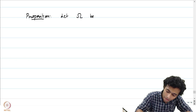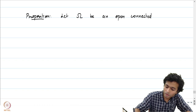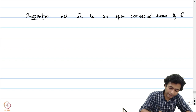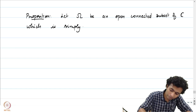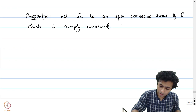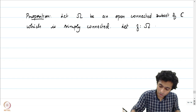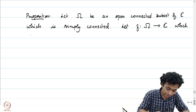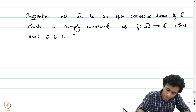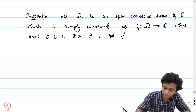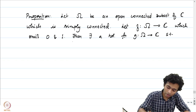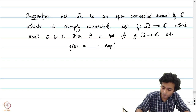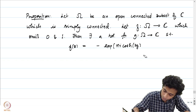Let omega be an open connected simply connected subset of C. Suppose f is a holomorphic function on omega which omits the 2 points 0 and 1 specifically — that means f inverse of 0 is empty and f inverse of 1 is empty. The conclusion is that there exists a holomorphic function g on omega such that f(z) equals minus of exp(πi) times cosh(2g(z)).